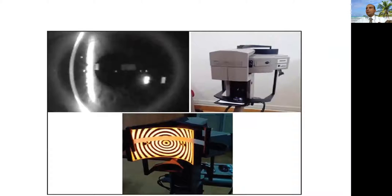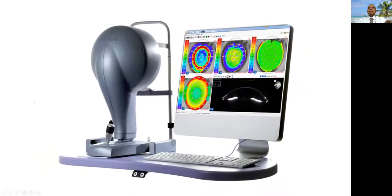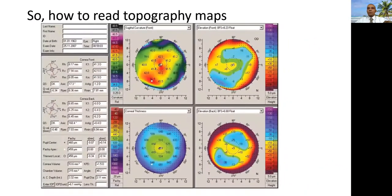This is a picture of the well-known Orbscan using a slit lamp for frequent measuring. And this is the CSO, which is a marvelous device combining both a placido disc and a Scheimpflug camera. And this is the well-known Pentacam, which uses Scheimpflug camera capturing images from all around the cornea. And this is how the printout of the Pentacam will be printed.